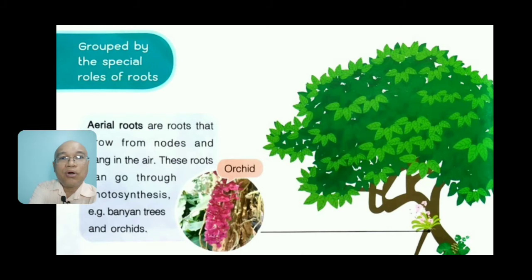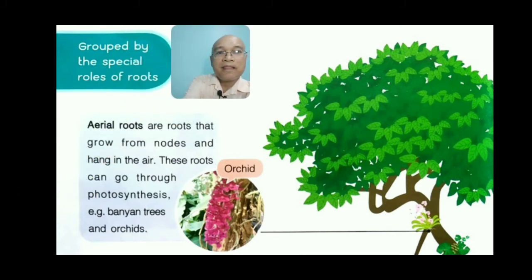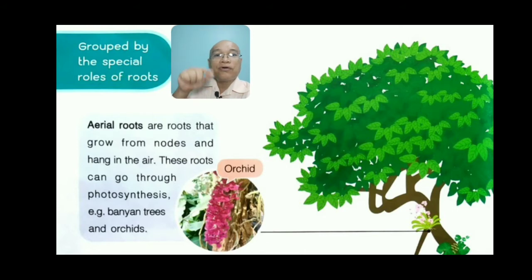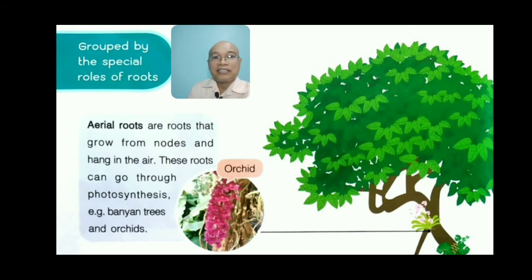You can also group plants by special area roots. Aerial roots are roots that grow from nodes and hang in the air — that's why they're called aerial roots. These roots can perform photosynthesis, which is the process of converting light into energy by the plant using its green pigment. Examples include banyan trees and orchids.